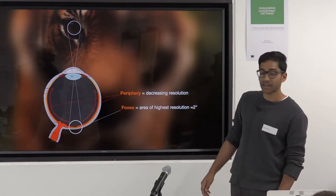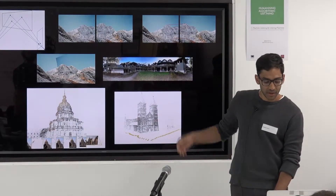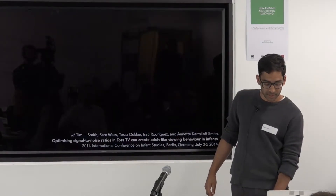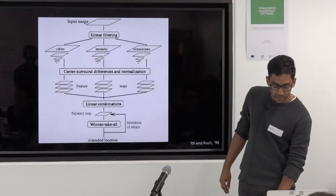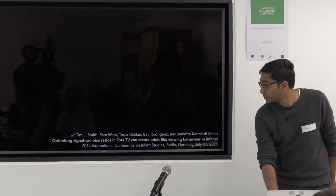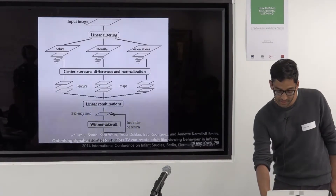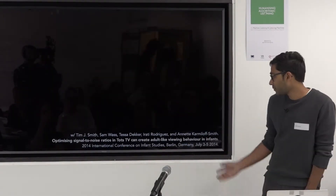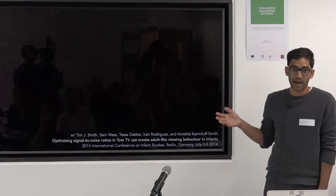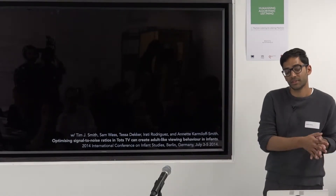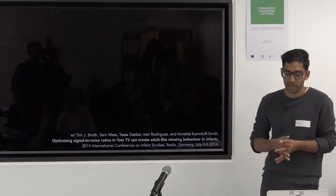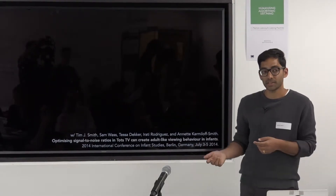Eye movements occur three to four times a second — how is it that we're able to build scene understanding over time? I've looked with collaborators on how eye movements differ, for instance, in autistic and typically developing children, and used that to inform our understanding.